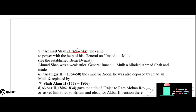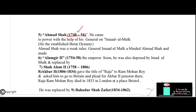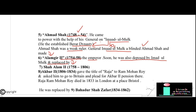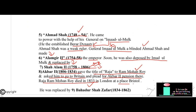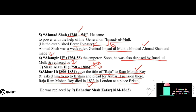Muhammad Shah was succeeded by Ahmad Shah (1748–1754), who came to power with the help of general Imad-ul-Mulk, who established the Bihar dynasty. Imad-ul-Mulk blinded Ahmad Shah and made Alamgir II (1754–1758) emperor, then deposed him too and replaced him with Shah Alam II, who ruled from 1758 to 1806. Shah Alam II was succeeded by Akbar II (1806–1834), who gave the title of Raja to Raja Ram Mohan Roy. Akbar II was replaced by Bahadur Shah Zafar (1834–1862), during whose reign the Revolt of 1857 was fought.